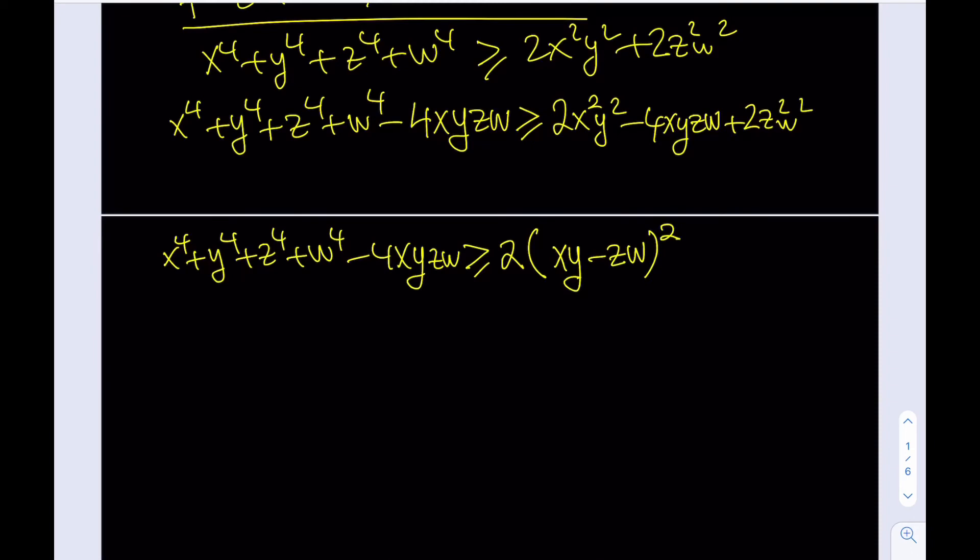Now what is so special about this? Well, this is a non-negative quantity again because it's something squared multiplied by 2, so everything is non-negative here, which means that this expression is greater than or equal to 0.